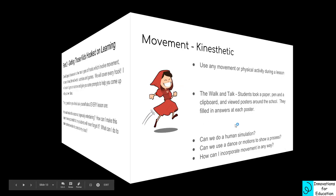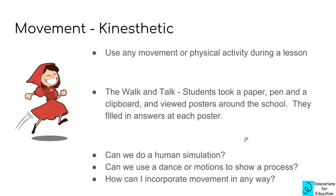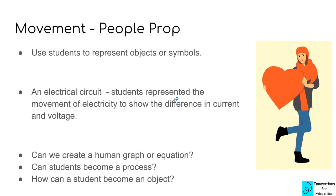The first category is movement, and the first hook is kinesthetic — use any movement or physical activity during the lesson. The example is the walk and talk: students took a piece of paper, a pen, and a clipboard and viewed posters around the school, filling in answers at each poster. They're getting to leave the classroom. You should ask yourself: could you do a human simulation? Could you use dance or motions to show a process?